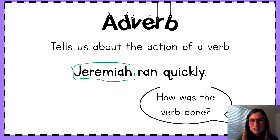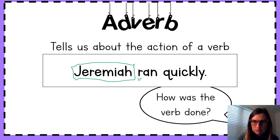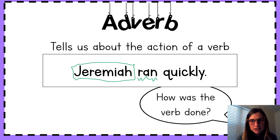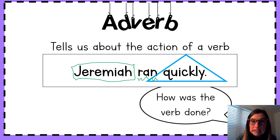Now, what is the verb? What did he do? He ran. Good job. Jeremiah's a fast runner. Now, let's ask ourselves this important question to see if we can find our adverb. Which word tells us how Jeremiah ran? How was the verb done? How was the running done? Quickly. Yes. How did he run? He ran quickly. Nice.